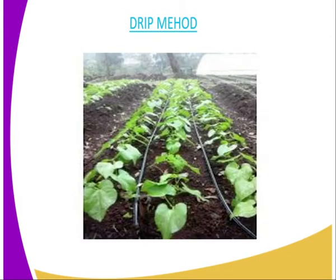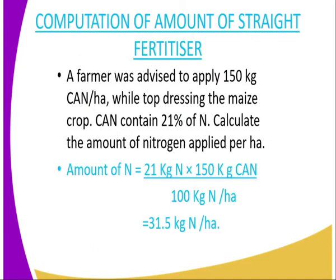The other method is the drip method. In the drip method, as you know, drip method is a method of supplying moisture to the soil to supply crops with water. The water which is used during the drip method is mixed with the fertilizer, and in the process of irrigation the fertilizer is also applied to the crops.